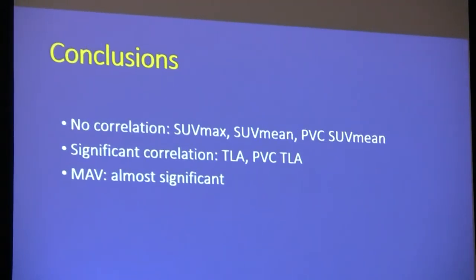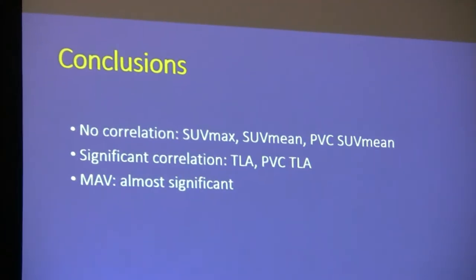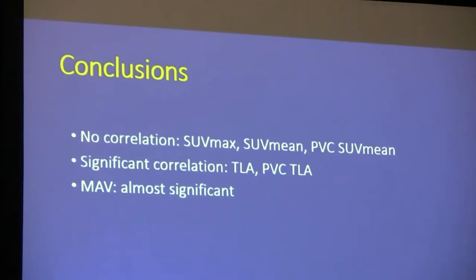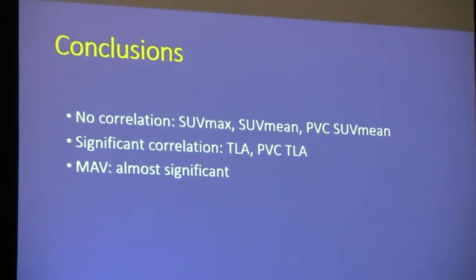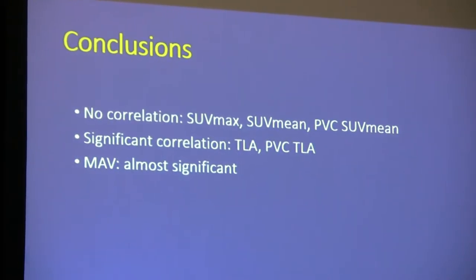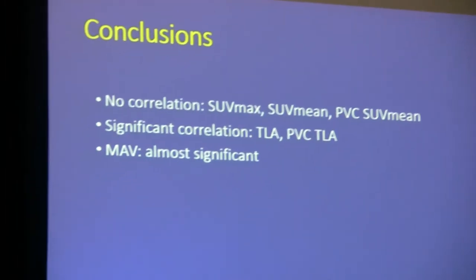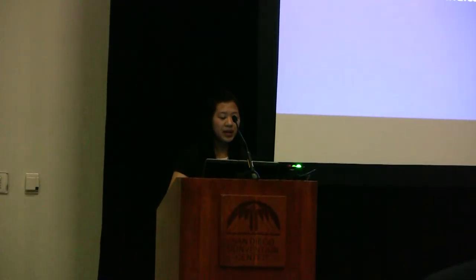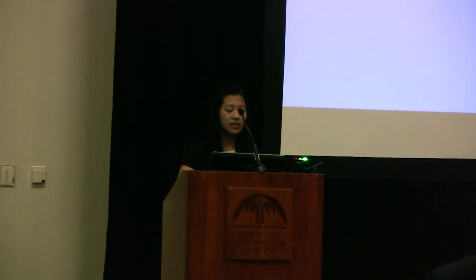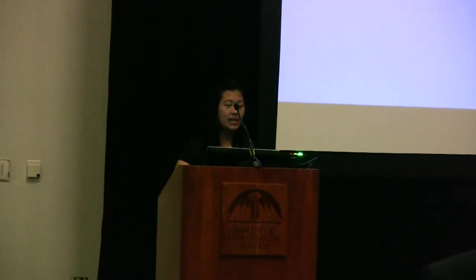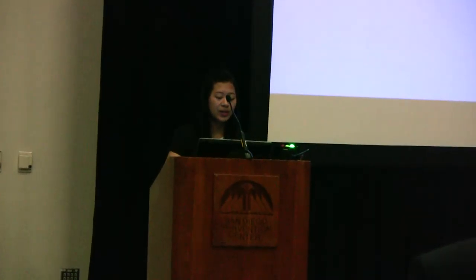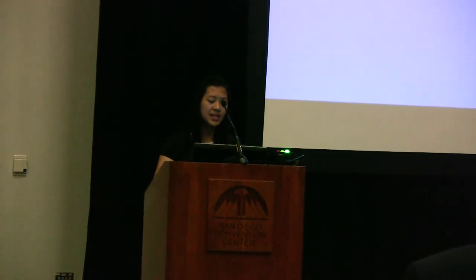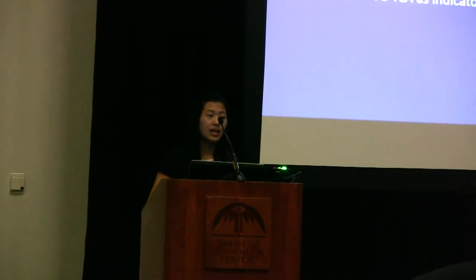This study was successfully able to apply novel quantification methods to patients with varying levels of DJD severity. Although we found that SUV max, SUV mean, and PVC SUV mean had no correlation, TLA and PBC TLA had significant correlation, while MAV was almost significant. This pilot study was the first to quantify sodium fluoride global uptake in peripheral joints, and our study suggests that sodium fluoride could be a future biomarker for degenerative joint disease, and that TLA and PBC TLA could be used as indicators of disease severity.